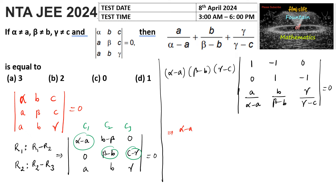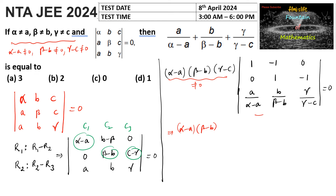We can write (alpha - a) times (beta - b) times (gamma - c) times the determinant equals zero. Since it is given that alpha ≠ a, beta ≠ b, and gamma ≠ c, none of these three factors are zero. Therefore, the remaining determinant itself must equal zero.